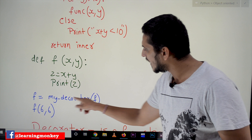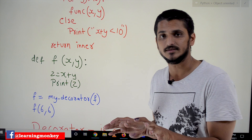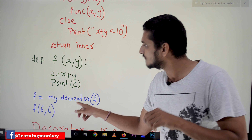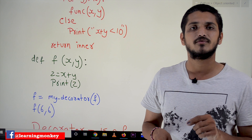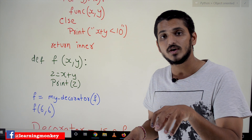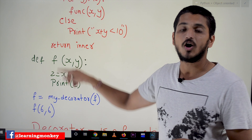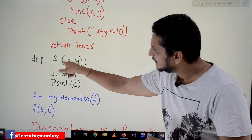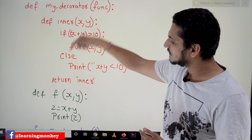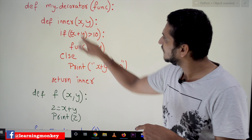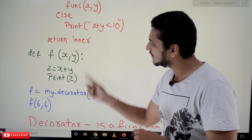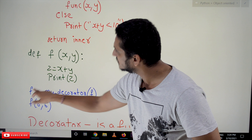So `f = my_decorator(f)` — what is this line of code showing us? We are calling the function `my_decorator` and sending the reference of function `f` as its argument. `my_decorator` receives the reference of `f`, creates a function object, and returns the reference of the inner function. So `f` is now pointing to the reference of the inner function.